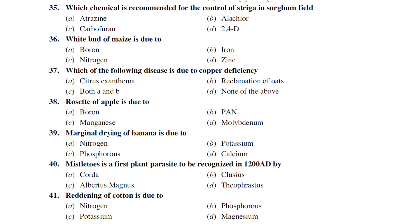For chemical control of Striga in sorghum fields, 2,4-D is the best herbicide/weedicide recommended for management of Striga. Among atrazine, alachlor, carbofuran, and 2,4-D — the answer is 2,4-D.